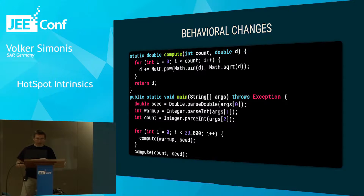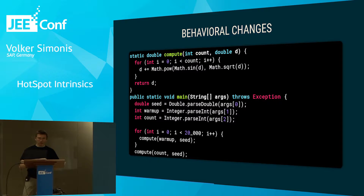Let's look at some behavioral changes. I've prepared another small program with a main that takes three arguments: a seed value, a warm-up value, and a count value. We call the compute function 20,000 times with the warm-up value (1), so it loops once during warm-up and computes some mathematical function. After warm-up, to allow the C2 server compiler to compile the method, we call compute with a huge count — usually like a billion — so this function will need a lot of time.